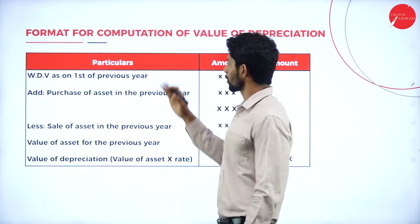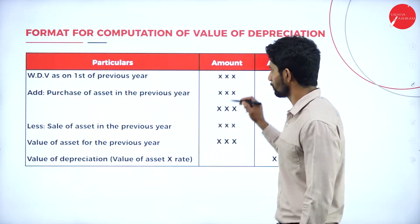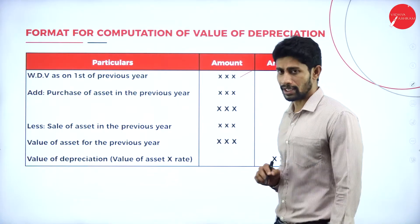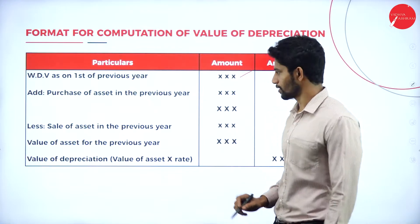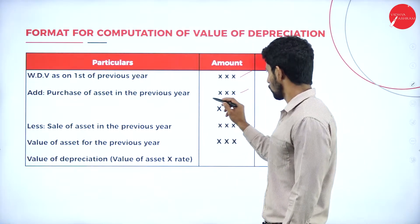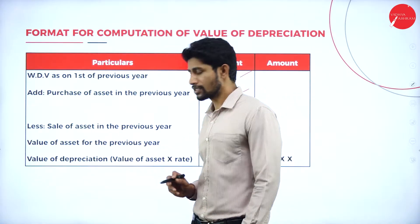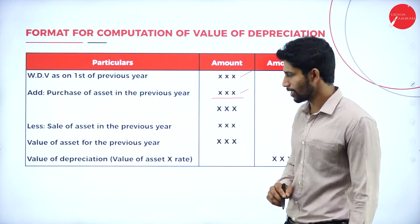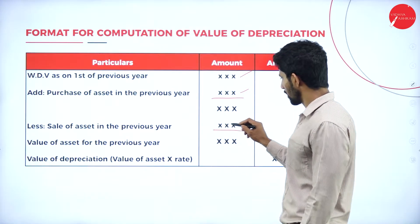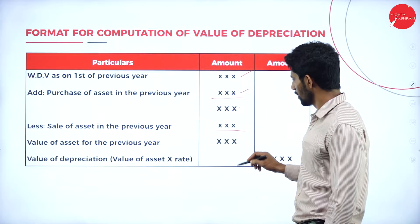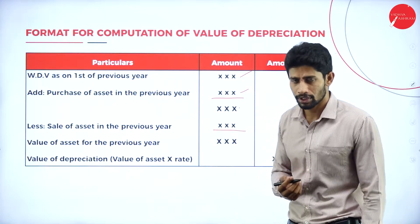So this is the format for computation of value of depreciation. WDV as on the first of the previous year — first we take that point, then add purchase of asset in the previous year. If you total these two values, you will get some total. From that total, less sale of asset in the previous year — you are going to deduct that sales value.